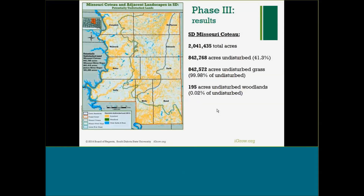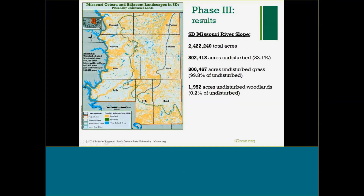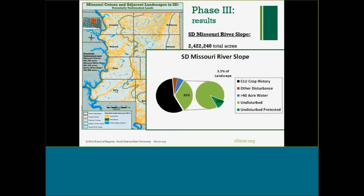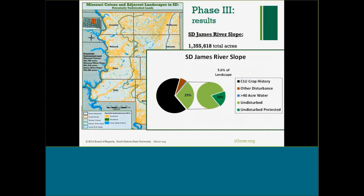On the Missouri Coteau of South Dakota, the same type of analysis applies. The central Missouri Coteau is about 41% undisturbed, and a pretty good chunk of that is protected. The Missouri River slope, along the Missouri, is about 33% undisturbed, but only about 10% of that undisturbed land is protected. The James River slope is about 28% undisturbed, with a slightly higher protection rate — those are primarily Fish and Wildlife Service easements in that country.